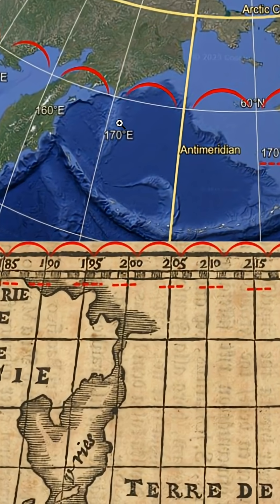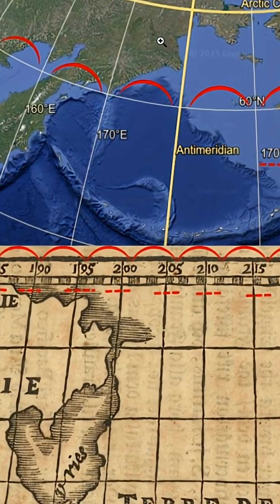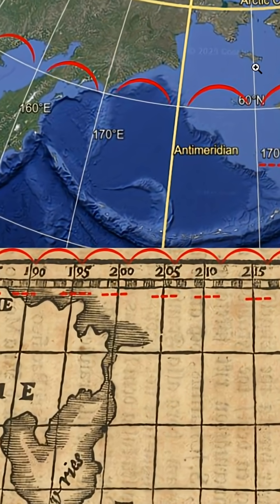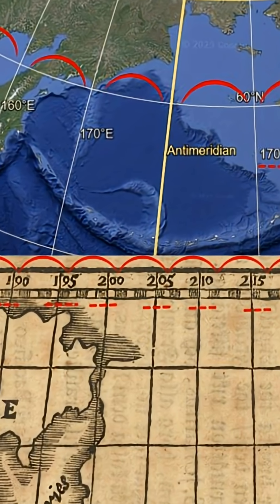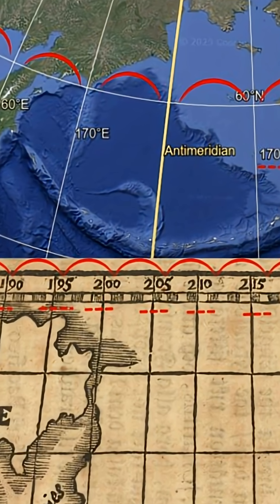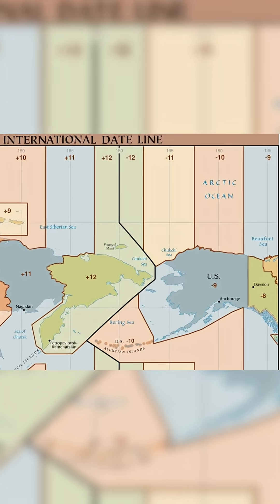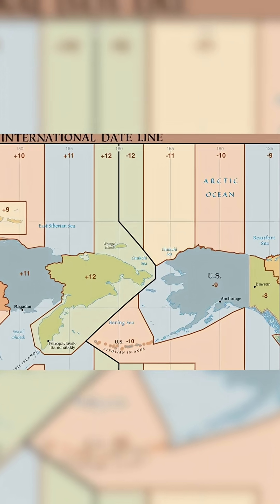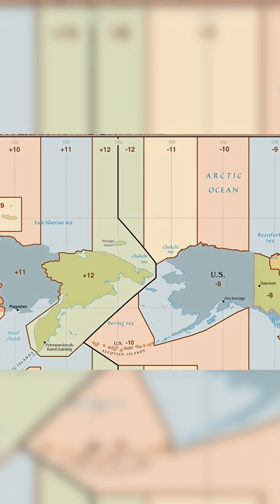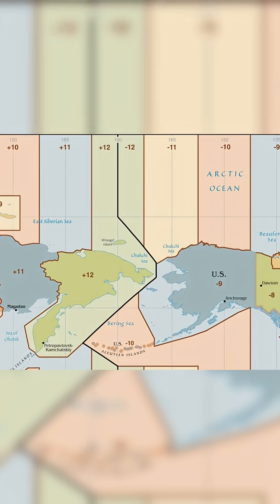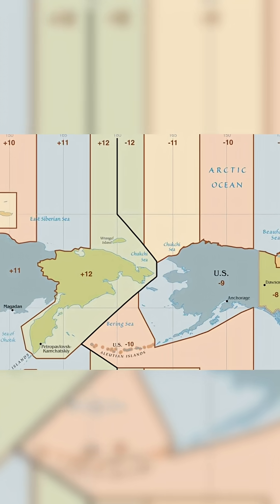The decision was made in 1884 at the conference in Washington, D.C. that longitudes would now reverse count from the 180-degree back to the prime meridian in Greenwich, England. The question has to be asked: why would they need the 180 meridian to be the point where they started counting backwards?